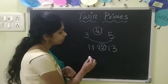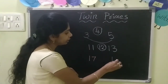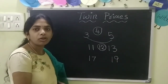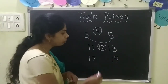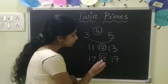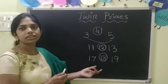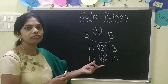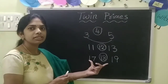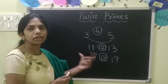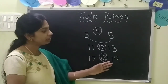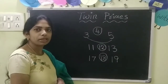And 17 and 19 are also called twin primes, because only one number is there in the middle — 18. And 18 is a composite number. There should be one and only one composite number between the two prime numbers. So 17 and 19 are twin primes.